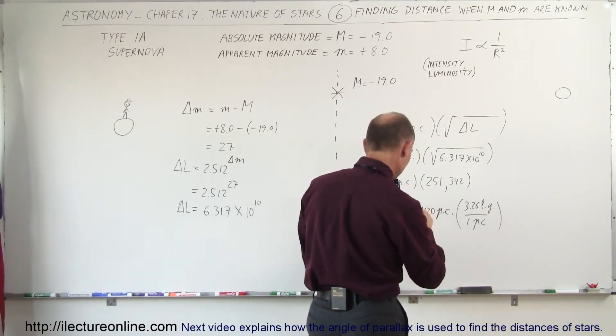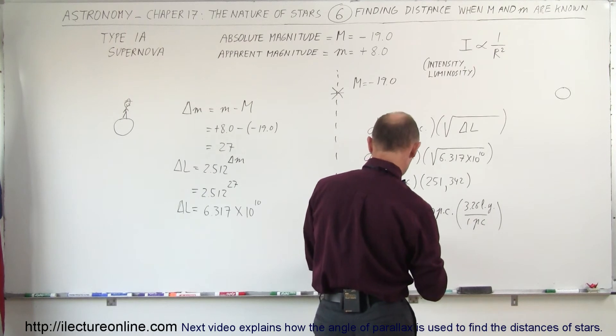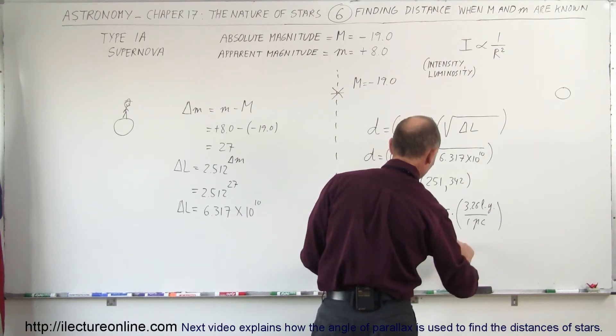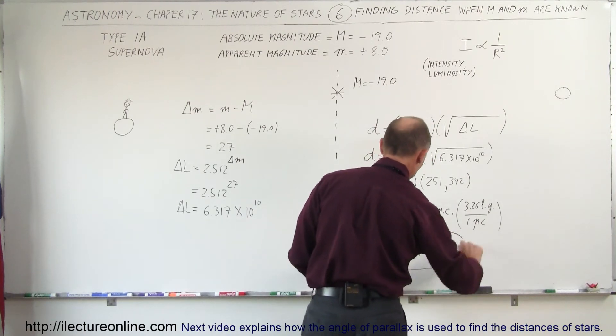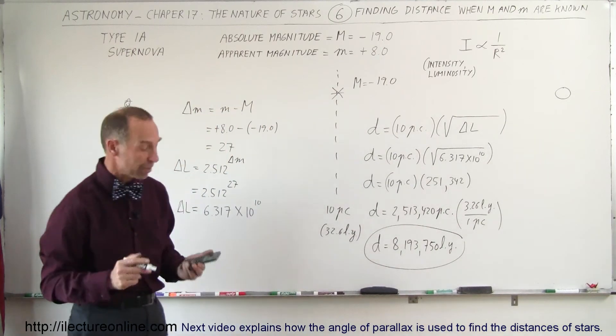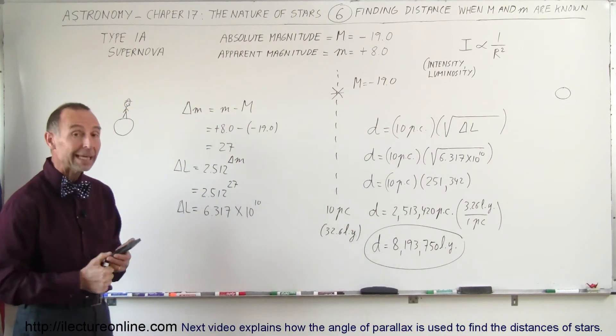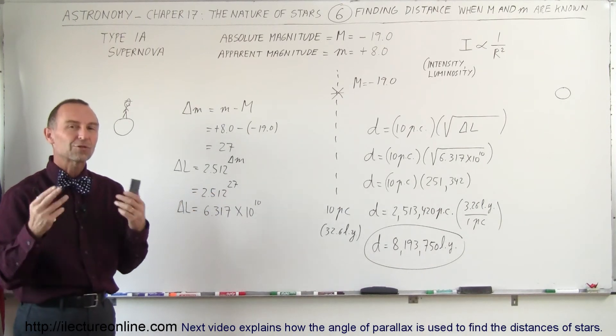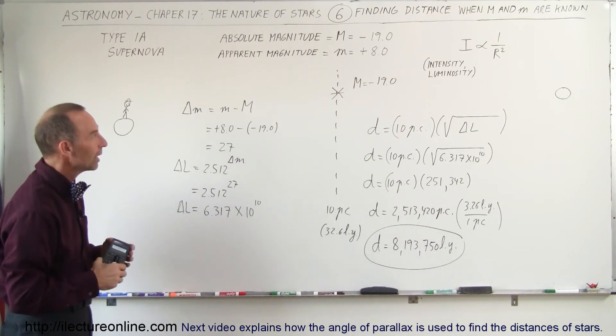It would be 8,193,750 light years. So it would be about a little over 8 million light years away. So it would be in another galaxy since our galaxy is not nearly that big. We can then say that we saw that supernova in some galaxy about 8 million light years away, and this is how we do that.